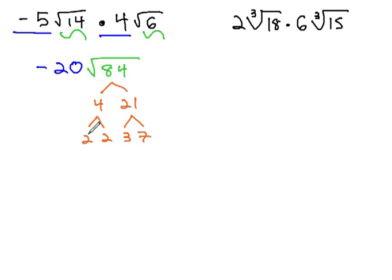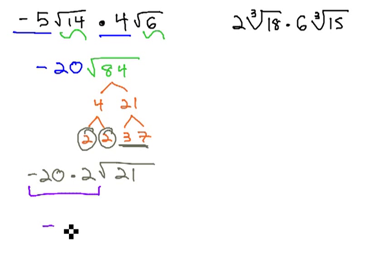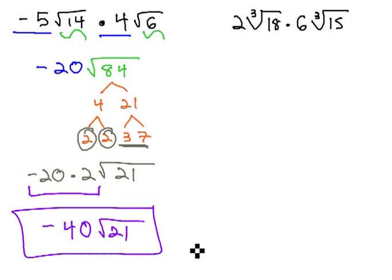We do end up with a match of 2's, so we can pull a 2 out. Negative 20's already outside, times 2. And under the square root, 3 times 7 is 21. Finish the problem by multiplying to get negative 40 times the square root of 21.